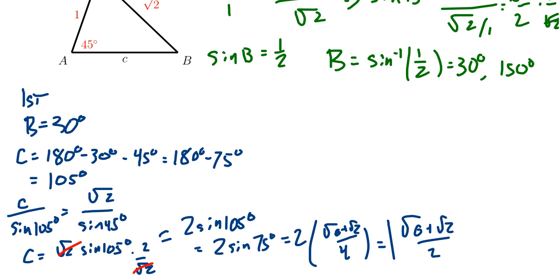If you instead get an approximate answer because you don't remember the exact value of sin 105° or sin 75°, that's perfectly acceptable, no big deal. So this gives us one triangle: B equals 30 degrees, C equals 105 degrees, and side c is (√6 + √2)/2, or approximately 1.932.